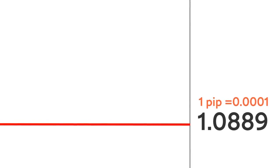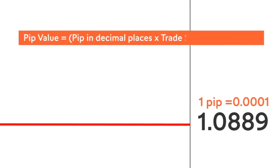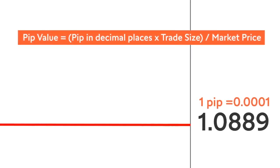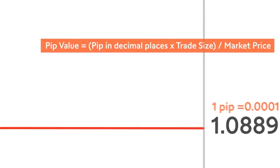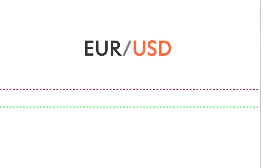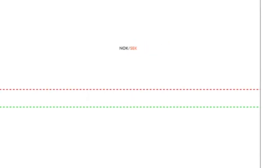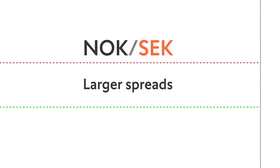The monetary value of each pip depends on three factors: the currency pair being traded, the size of the trade, and the exchange rate. A very liquid currency pair often has tight spreads of only a few pips, whereas less liquid currencies have larger spreads.